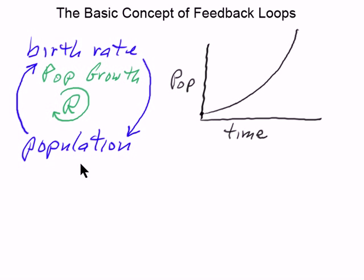If the change is in the opposite direction, we have a balancing loop. To make the behavior of this simple model more realistic, let's add a balancing loop right here. To do this, let's add the carrying capacity node.